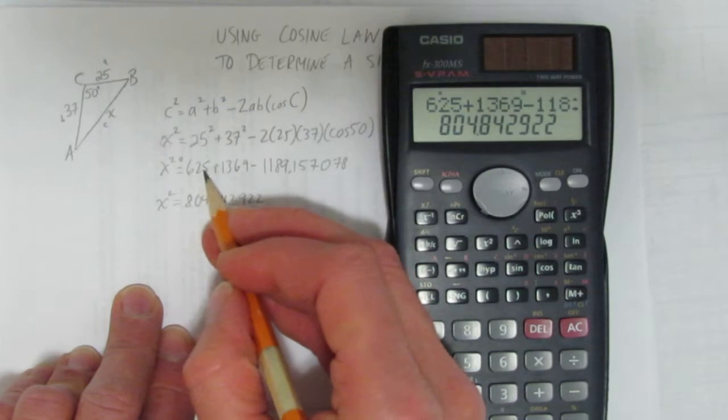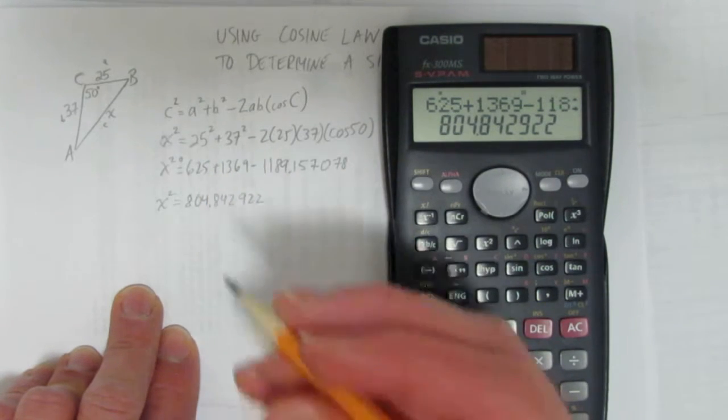So, from here to here I rounded, the calculator rounded, but from here to here it got an exact value, no rounding dot.